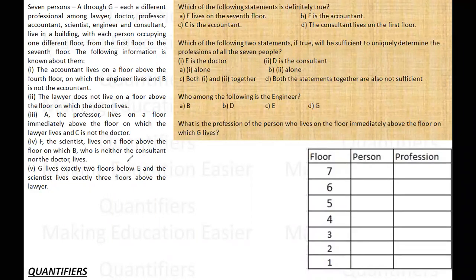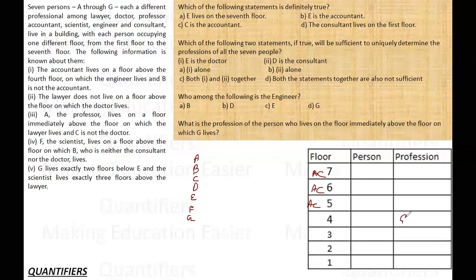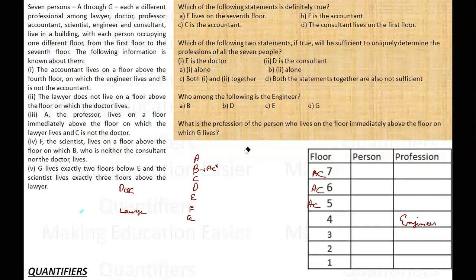I'll write whatever is given first and then do some permutations and combinations to see what is possible and what is not. The first point says the accountant lives on the floor above the fourth floor, so the accountant can be on floors five, six, or seven. The engineer lives on the fourth floor. B is not the accountant. The lawyer does not live on the floor above the floor on which the doctor lives — which means doctor is living above lawyer.